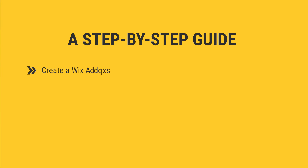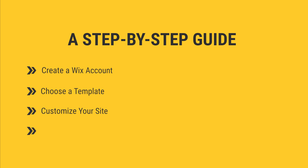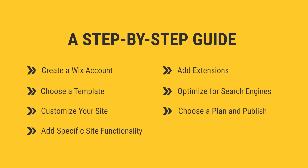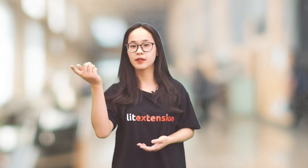Step 1: Create a Wix account. Step 2: Choose a template. Step 3: Customize your site. Step 4: Add specific site functionality. Step 5: Add extensions. Step 6: Optimize for search engines. Step 7: Choose a plan and publish. Why wait any further? Let's get into it!